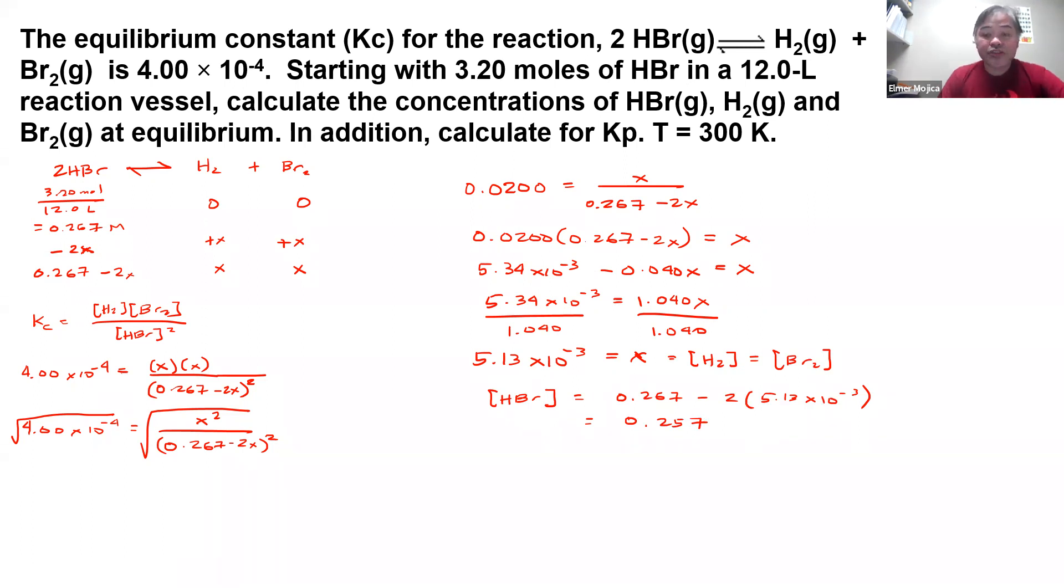Now you can double check by using these values: 5.13 times 10^-3 squared divided by 0.257 squared, and you're going to get the answer that is close to 4.00 times 10^-4. Now for the Kp...